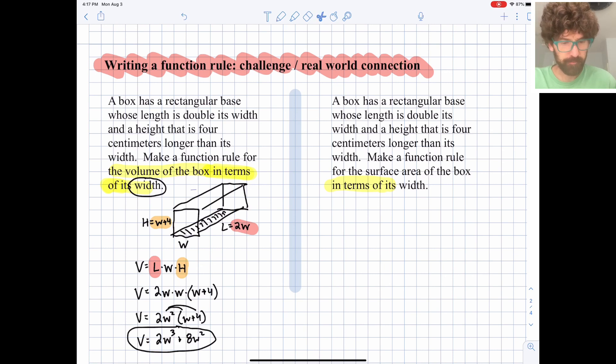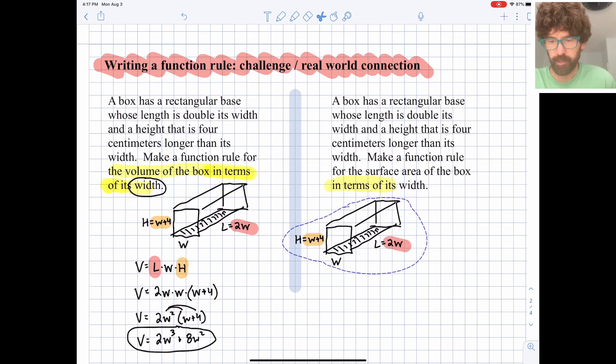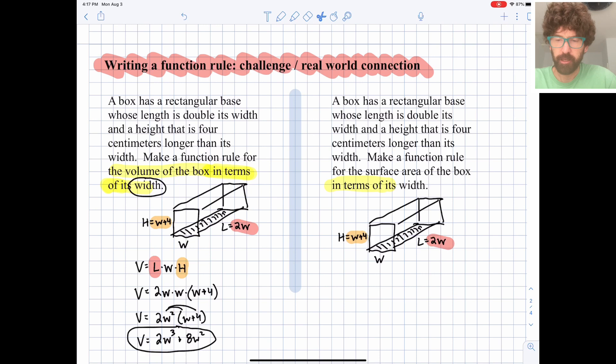I'm going to copy this here, if I can, over into here. And because it looks like we have the same setup here. A box has a rectangular base whose length is double its width, and a height that is 4 centimeters longer than its width. Okay, so let's find a rule for surface area.